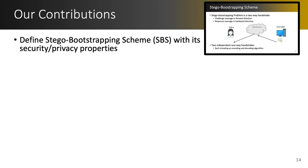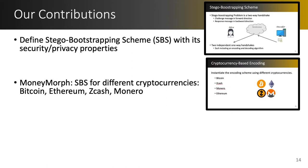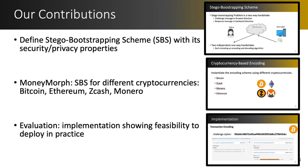First, we define the stego bootstrapping scheme with its security and privacy properties. Next, we introduce MoneyMorph, our instantiation of the stego bootstrapping scheme for Bitcoin, Ethereum, Zcash, and Monero. Finally, we show the feasibility of MoneyMorph by implementing it in the test networks of the mentioned cryptocurrencies. In the rest of the talk I plan to overview each of these contributions.